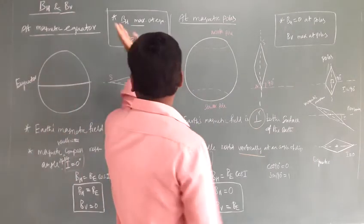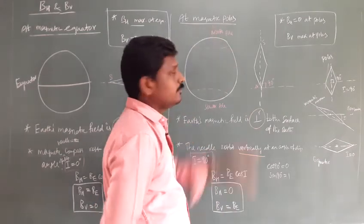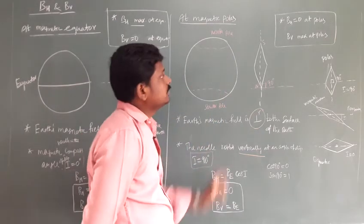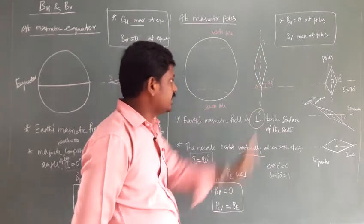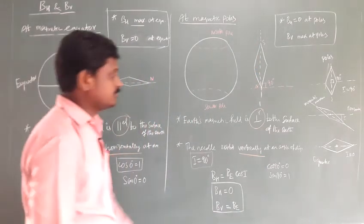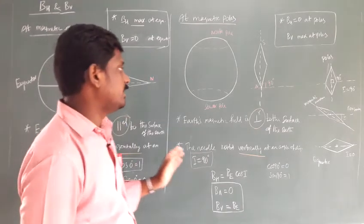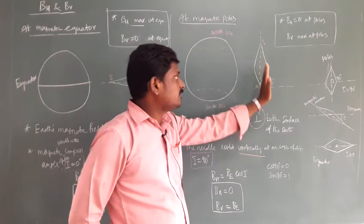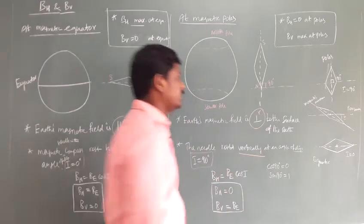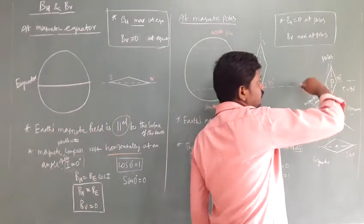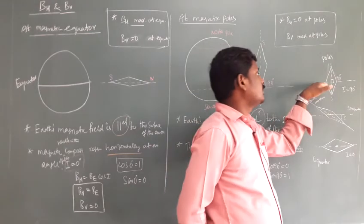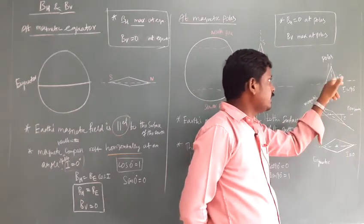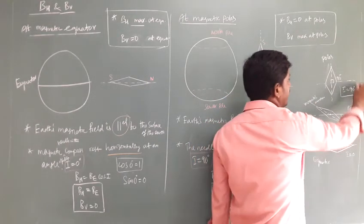Now, what is the value of BH and BV at the magnetic poles — that is, at the north pole and south pole of the earth? At the poles, the magnetic needle rests vertically, perpendicular to the surface of the earth. The angle between the magnetic meridian and the horizontal direction is 90 degrees, so I is equal to 90 degrees.